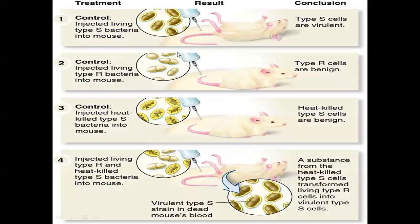Looking at the picture: in the control, S type bacteria carrying virulent genes are injected into mice and the mice die. If you inject R type bacteria — which are non-pathogenic, non-virulent, benign — the mice survive. As another control, when heat-killed S3 type bacteria are injected into mice, the virulent gene becomes silent and the mice also survive.